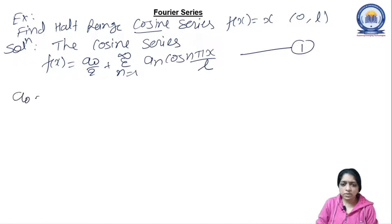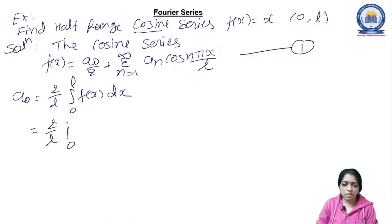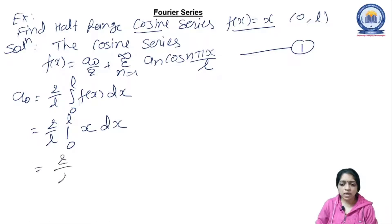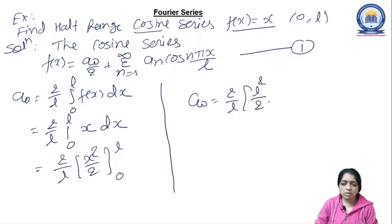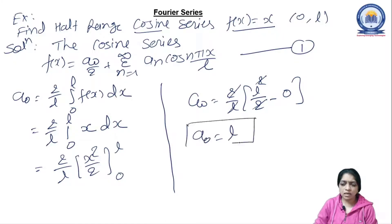Let's start with a₀. The formula for a₀ is (2/L) ∫₀ᴸ f(x) dx. Since our limits are 0 to L and f(x) = x, we integrate x dx. The integration of x is x²/2, with limits 0 to L. After substituting the upper and lower limits we have L²/2 minus 0, and the L and 2 both cancel, so the final value of a₀ is L.